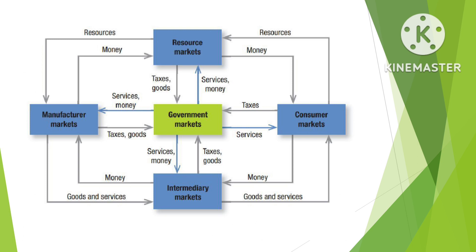Five basic markets and their connecting flows are shown in Figure 1.1. Manufacturers go to resource markets, buy resources, and turn them into goods and services. They sell finished products to intermediaries who sell them to consumers. Consumers sell their labor and receive money to pay for goods and services. The government collects tax revenues to buy goods from resource, manufacturer, and intermediary markets and uses these to provide public services.